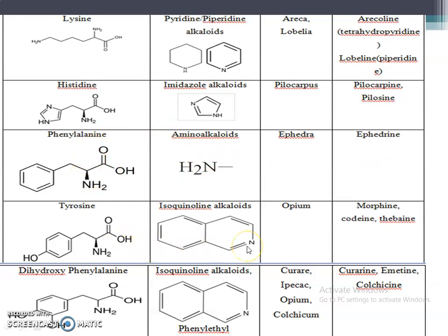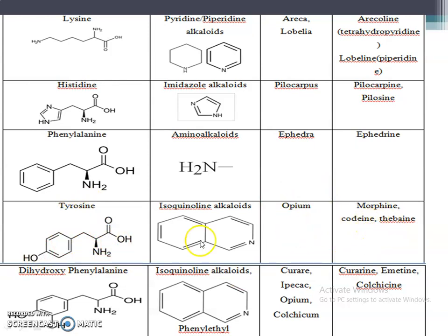Isoquinoline alkaloids like opium are obtained from tyrosine - this amino acid has one hydroxyl group attached. Opium contains morphine, codeine, and thebaine, all of which are derived from the tyrosine amino acid.